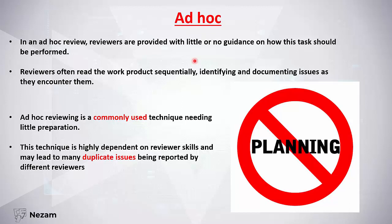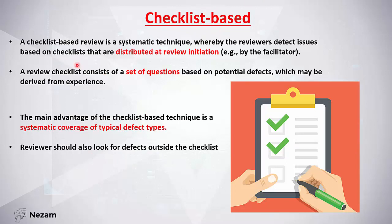In an ad hoc review, reviewers are just given the document without any guidance on how to review it. This technique is commonly used when little preparation time is available. It has two problems: it depends heavily on reviewer skills, so if reviewers are not skilled the review won't achieve its objective; and it may lead to many duplicate issues — for example, two reviewers independently finding the same defects, wasting time on duplicates.